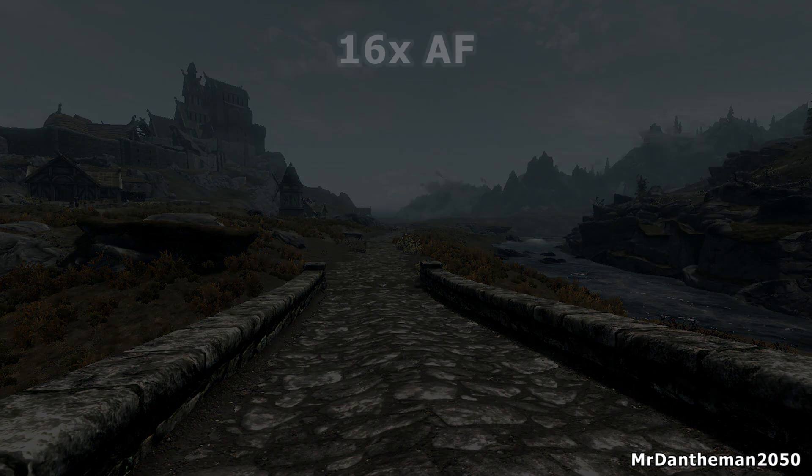This is the stereotypical image you see whether on Wikipedia or Google — by turning the setting up you're improving image quality. In this scenario, the higher you turn it up the more detail you can see.